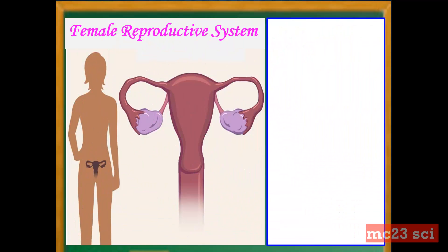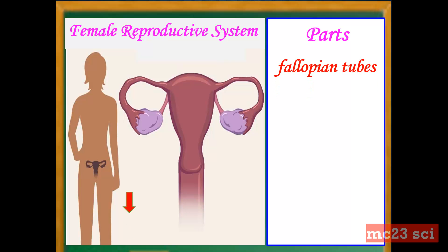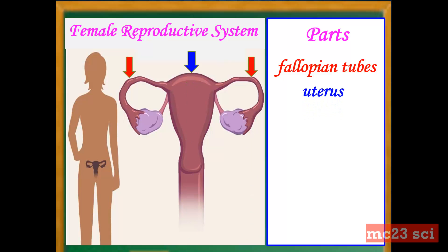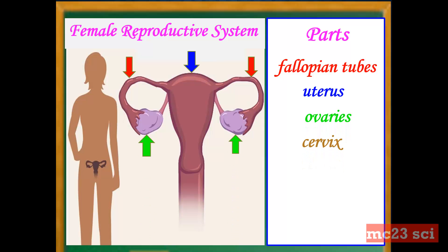Take a look at the picture. We're going to discuss the parts of the female reproductive system: the fallopian tubes, the uterus, the ovaries, the cervix, and the vagina.